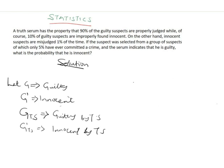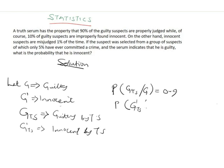From the first part of the question, 90% of guilty suspects are properly judged guilty. So the probability of being judged guilty by the truth serum given that the person is already guilty is 0.9. The probability of the truth serum declaring innocent given that the person is guilty is 1 minus 0.9, which is 0.1.